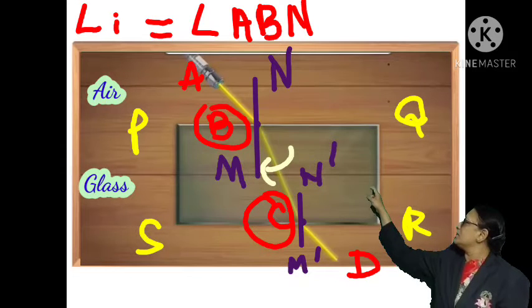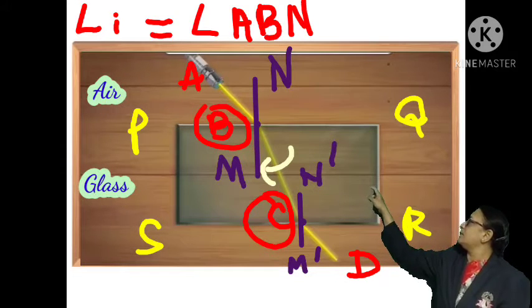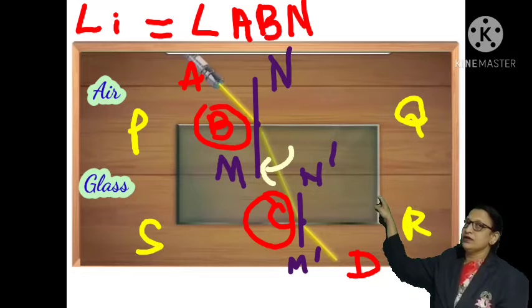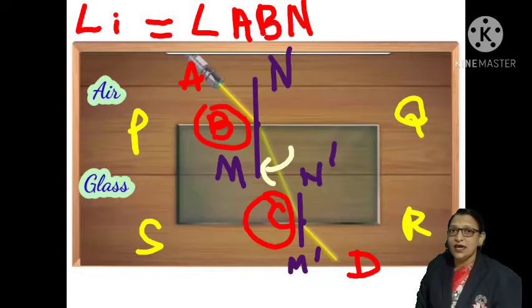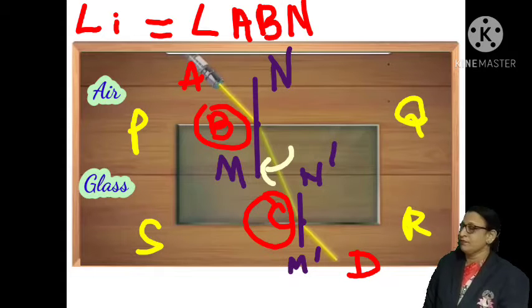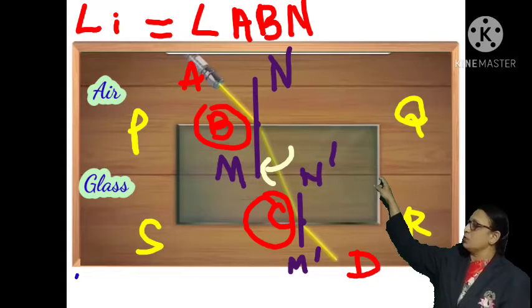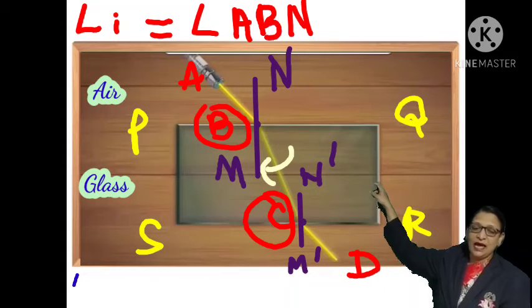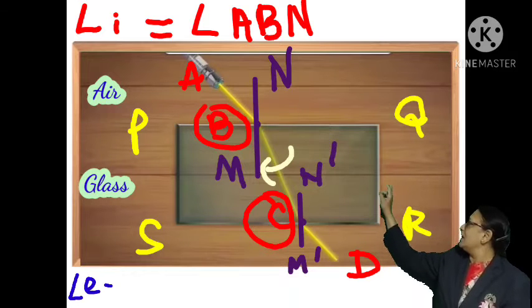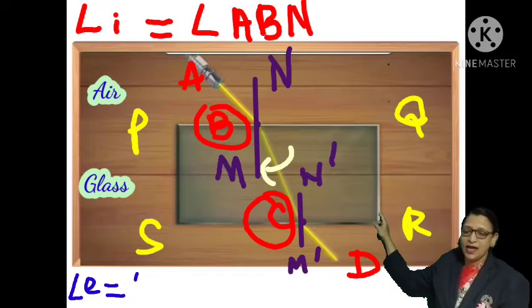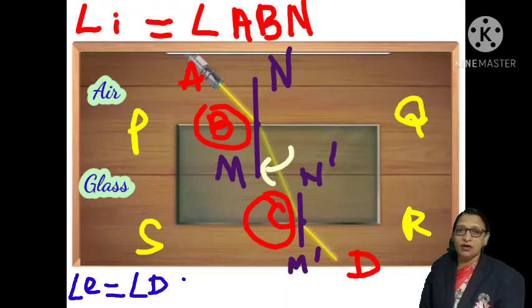At point C, we draw the perpendicular, which is the normal N'CM'. The angle formed, DCM', is the angle of emergence.